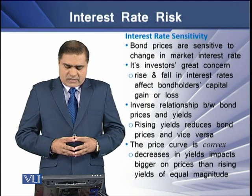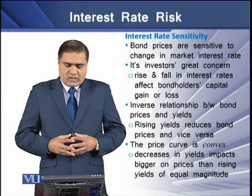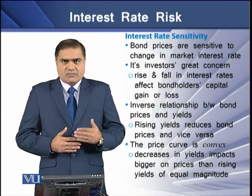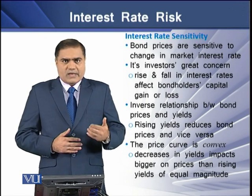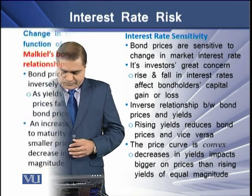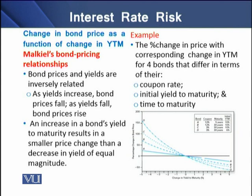We also know that bond price behavior is a convex phenomenon. This means that a decrease in yield impacts bond prices more than a rising yield of equal magnitude. To understand this, we have an example showing the percentage change in price with corresponding change in yield to maturity for four bonds that differ in terms of their coupon rate, initial yield to maturity, and time to maturity — illustrating how bond price changes as a function of change in YTM, concepts also termed Malkiel's bond pricing relationships.